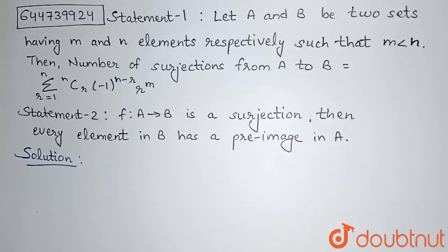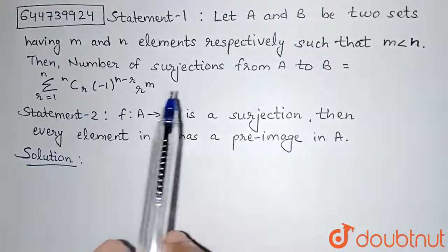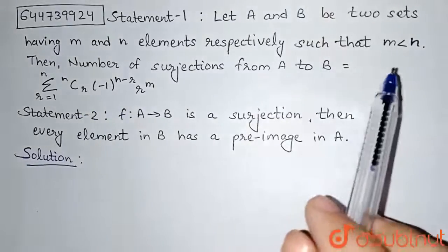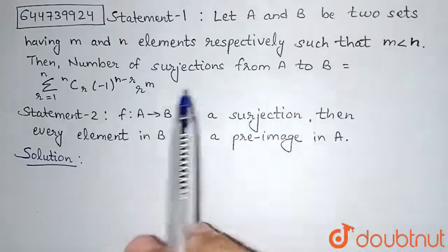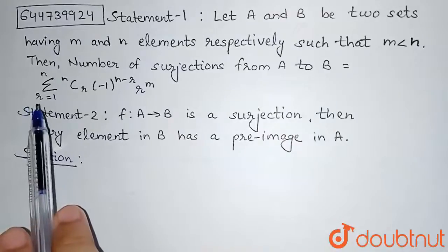Hello everyone, the question is statement 1. Let A and B be two sets having M and N elements respectively such that M is less than N. Then number of surjections from A to B equal to summation from R equal to 1 to N.